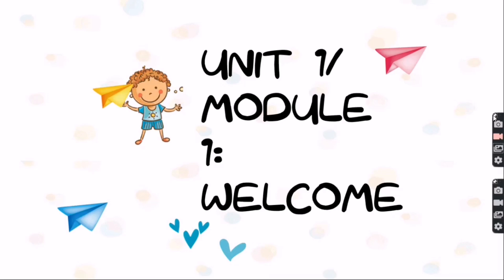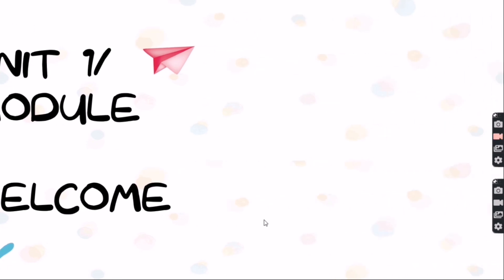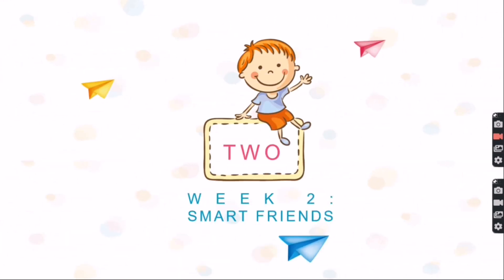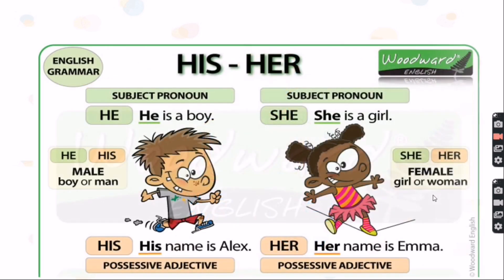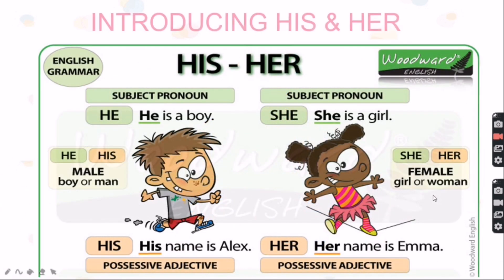We're going to learn the second topic for this week, which is Topic 2, Week 2 — Smart Friends. Before we start, we're going to be introducing 'his' and 'her'. You are going to learn about how to differentiate between his and her.